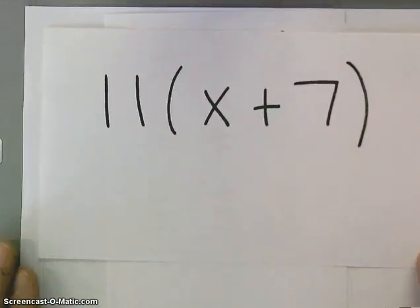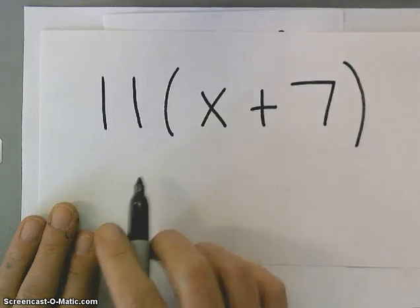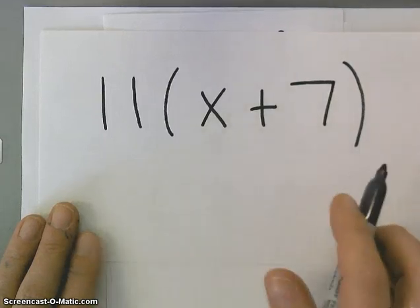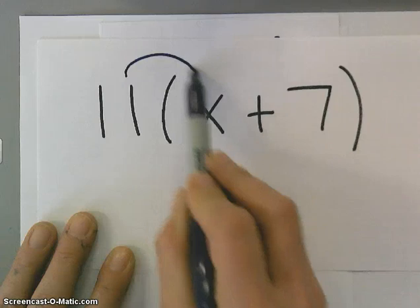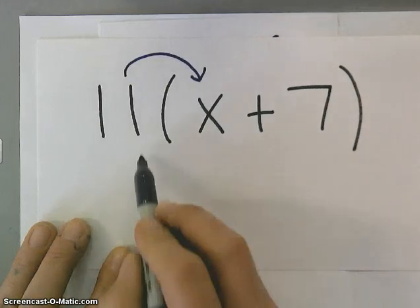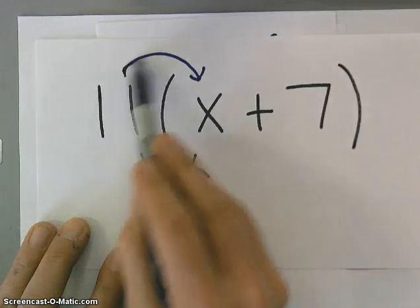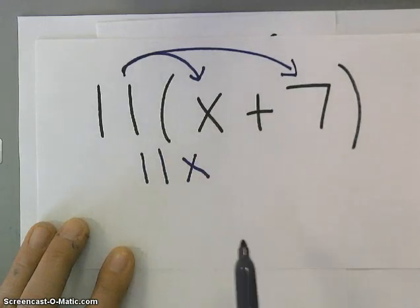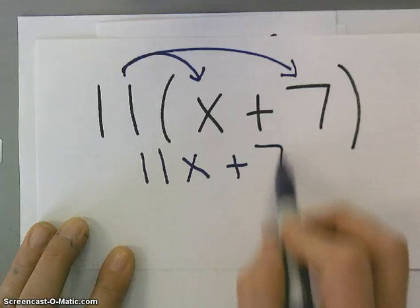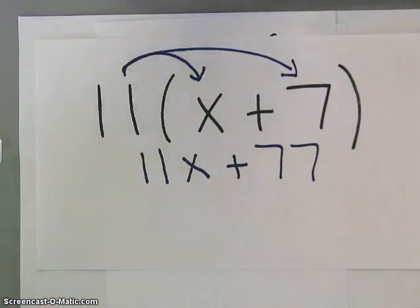Let's do some examples. This is 11 times the quantity x plus 7. So I need to take this 11 and multiply it by x, and so I get 11x. And then I take 11, and I also have to multiply it by 7, so I get 77. So my answer is 11x plus 77.